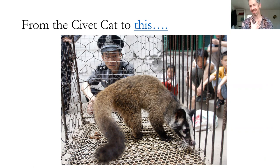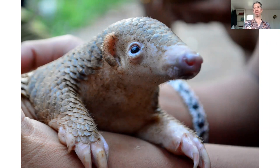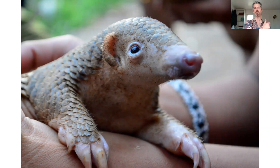The contender for the zoonotic transmitter of COVID-19 is the pangolin — a mix between an armadillo and an anteater. It's believed to be the same process: a bat infected a pangolin, the virus mutated in the pangolin, where it became able to infect humans. That's the current theory.